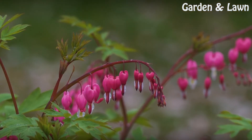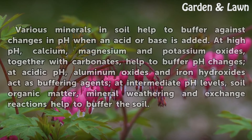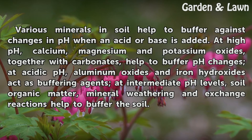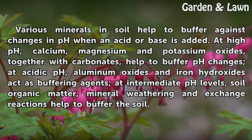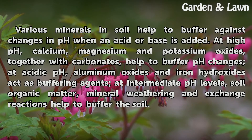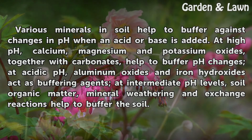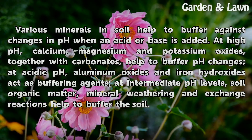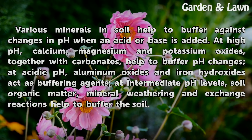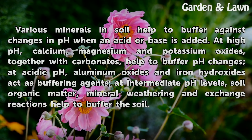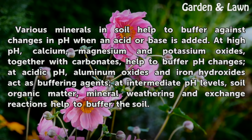Features. Various minerals in soil help to buffer against changes in pH when an acid or base is added. At high pH, calcium, magnesium and potassium oxides, together with carbonates, help to buffer pH changes. At acidic pH, aluminum oxides and iron hydroxides act as buffering agents. At intermediate pH levels, soil organic matter, mineral weathering and exchange reactions help to buffer the soil.